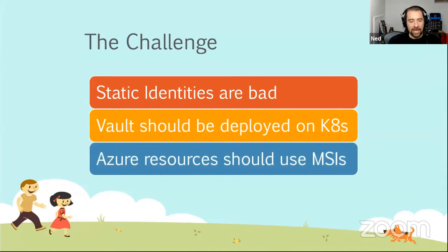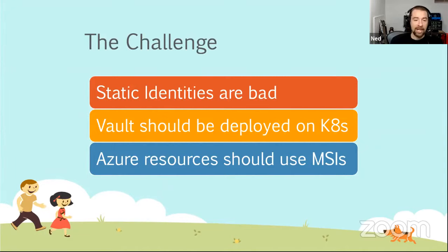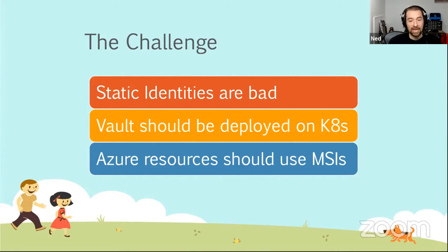The third challenge, and this is more of an Azure challenge, is that Azure resources should also not have statically defined credentials. They shouldn't be using usernames and passwords. They should be using what are called managed security identities — identities that are associated with Azure VMs or other resources. When they want to access something else, they ask for a token from Azure Active Directory, that token is good for a certain amount of time, and they can use it to get permissions to other resources in Azure. Sounds kind of similar to what Vault is doing.